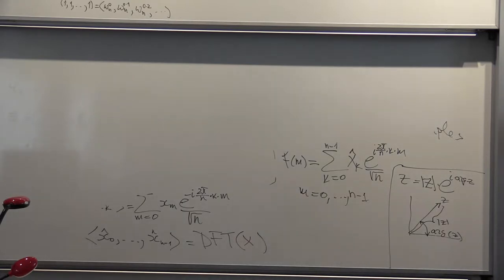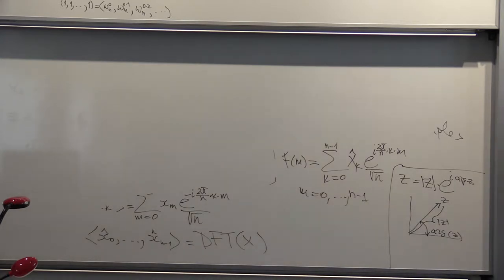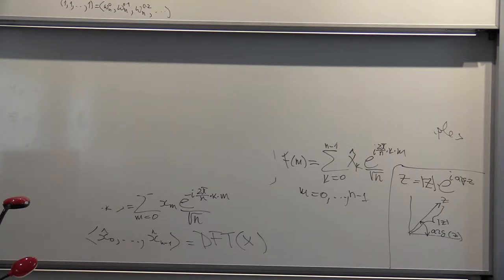So to get these coefficients that make this equality, you simply project — you find the projection on every coordinate vector. The scalar product between f and e to the int is simply the integral: 1 over 2π, integral from minus infinity to infinity, of f of t times e to the minus int dt. That is your c_n.